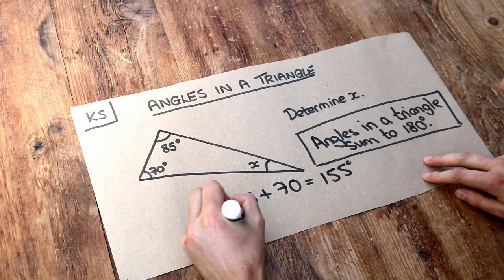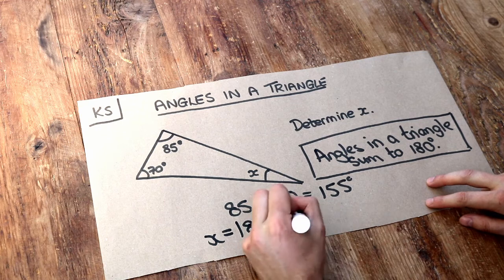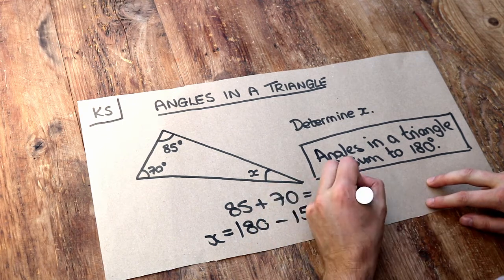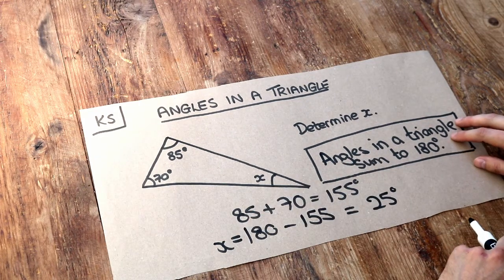Well, we subtract from 180 degrees. So 180 minus the sum of the other two angles, and that gives us 25 degrees. So this remaining angle is 25 degrees.